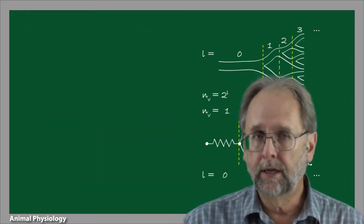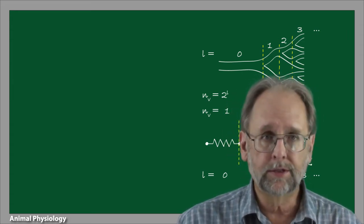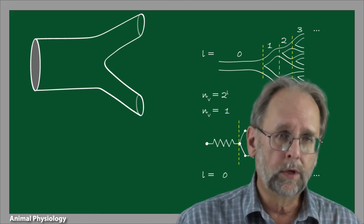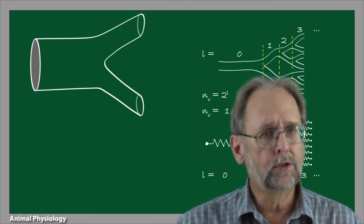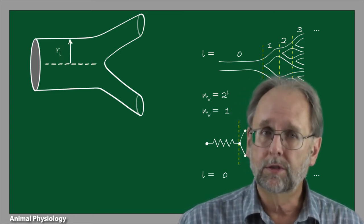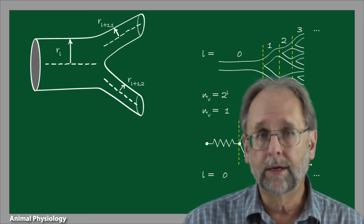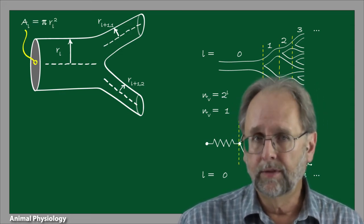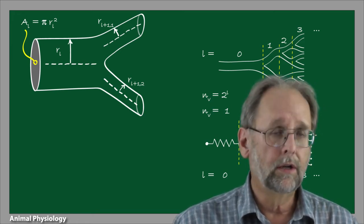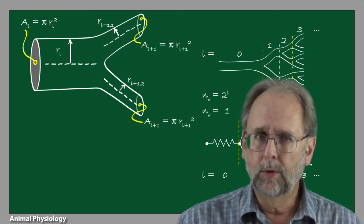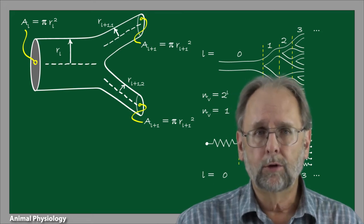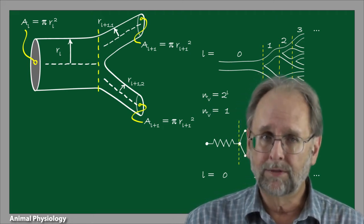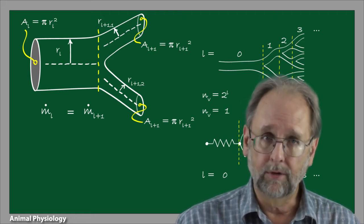We can also use these branching networks to say something about the distribution of blood amongst the daughter vessels, and even things like how fast blood is flowing through them. Here's a simple branching element consisting of one parent and two daughter vessels. Let's start laying out some properties. The parent vessel has a radius of r sub l, and each daughter vessel has a radius of r sub l plus one. l, remember, is the branching level. We can calculate a cross-section area for each. Given these vessels are usually circular in cross-section, this cross-section area will be pi times the radius squared. Okay, what can we tell from this? Let's start with how blood flow through the parent vessel is distributed into the daughter vessels.